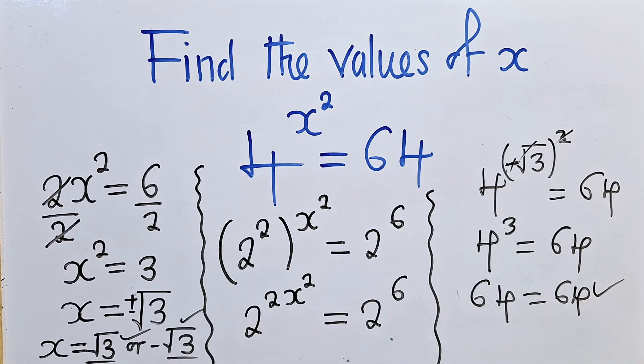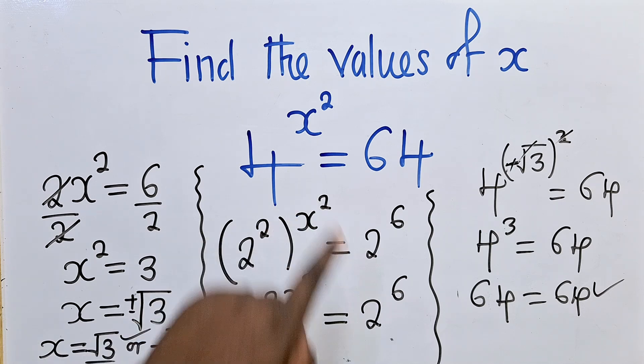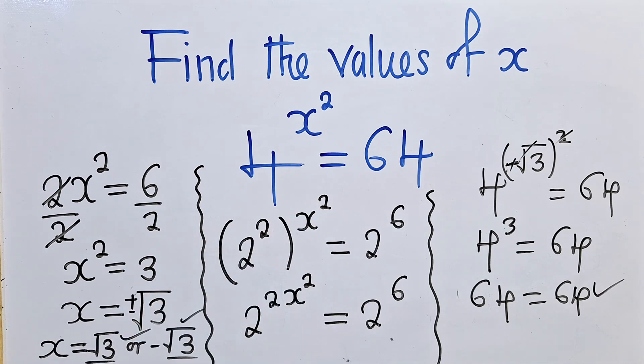So these are the two solutions of the given equation. Thank you so much for watching. Please remember to share this video. Leave a comment in the comment section. This has been C-chamber Jacob and bye-bye.